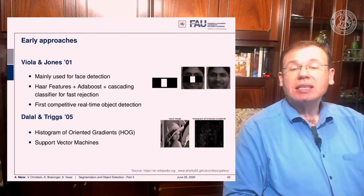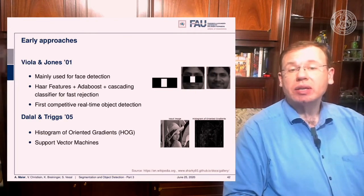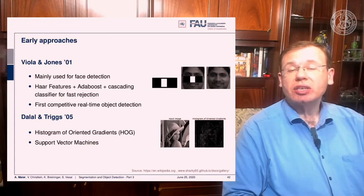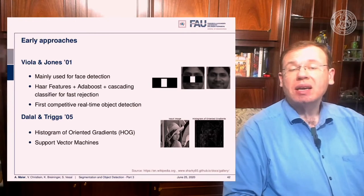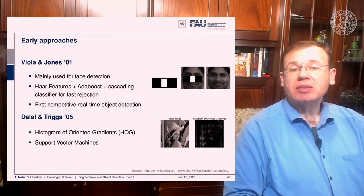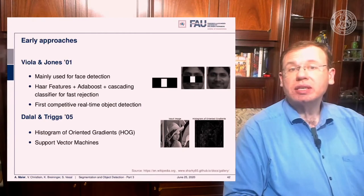This was then improved with the histogram of oriented gradients. In classical methods, you always had a good feature extraction step plus effective classification, and at that time support vector machines were very common.